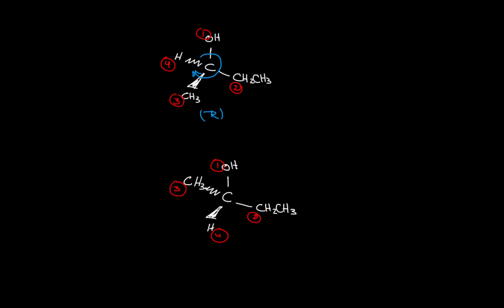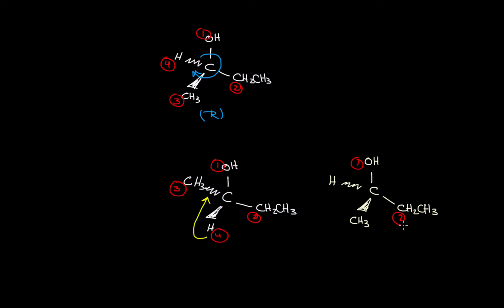Before I can determine the rotation — whether it's clockwise or counterclockwise — I need first to send the lowest priority group to the back. To do this, by sending H to the back, I bring CH3 to the front and CH2CH3 stays in the plane. Now for the priority we have one, two, three, four, and as we said before, that's going to be clockwise.